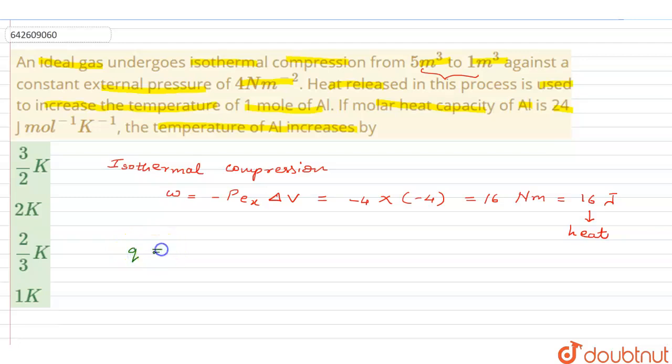...as Q, is equal to n (that is number of moles) into molar heat capacity into delta T. Delta T is what we have to find out, isn't it? So furthermore, Q we have is 16, then...